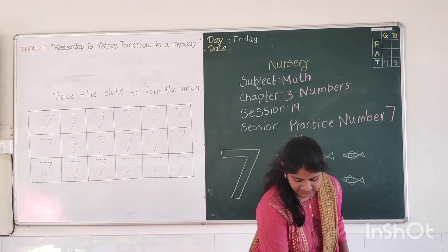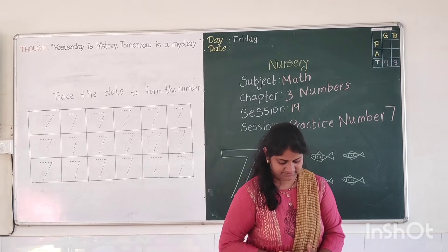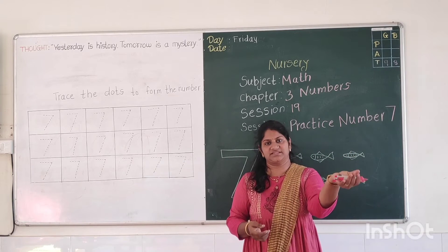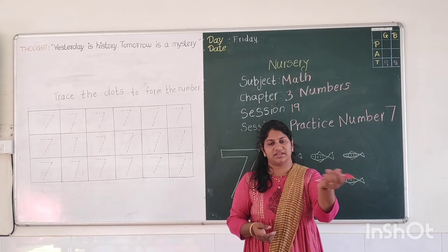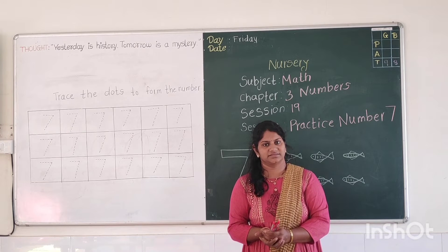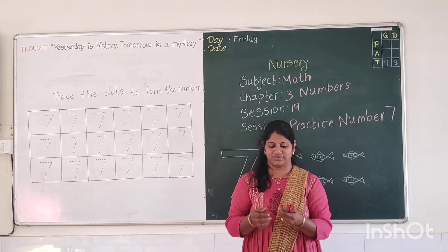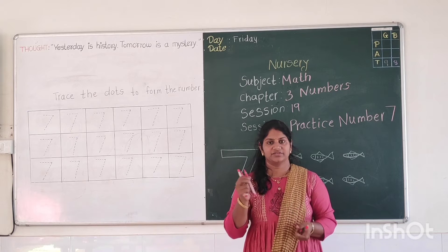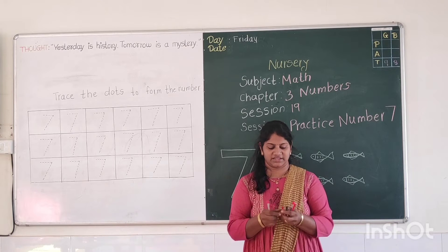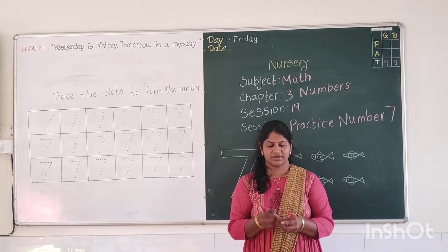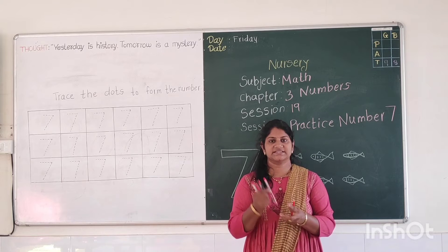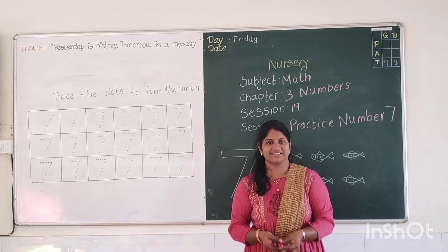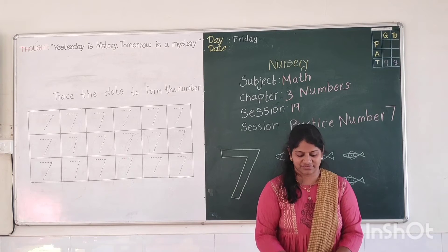I have some paints. These are paints but I don't know how many paints I have. Can we count? Yes, very good. 1, 2, 3, 4, 5, 6 and 7. Yes, 7 paints I have.